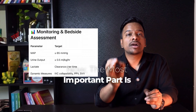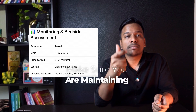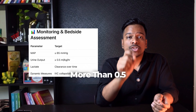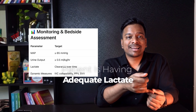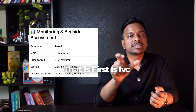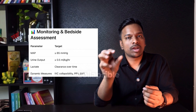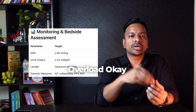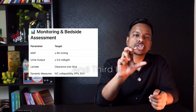The most important part is monitoring and bedside assessment. Make sure you are maintaining a MAP of more than 65 mmHg, urine output of more than 0.5 ml per kg per hour, patient is having adequate lactate clearance, and you also have to check dynamic parameters: first is IVC collapsibility — make sure that IVC is properly collapsible; if IVC is not collapsible that means the patient is having fluid overload. Second is pulse pressure variation, and third is stroke volume variation.